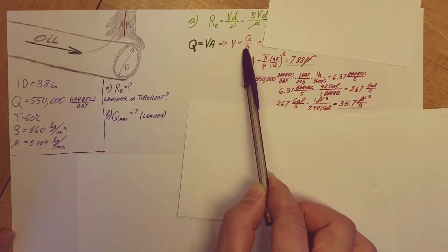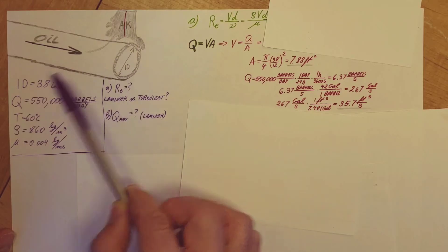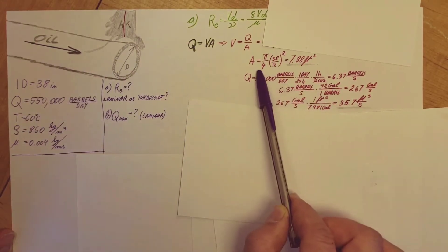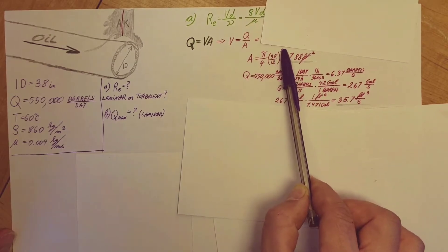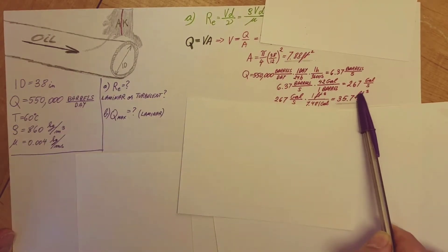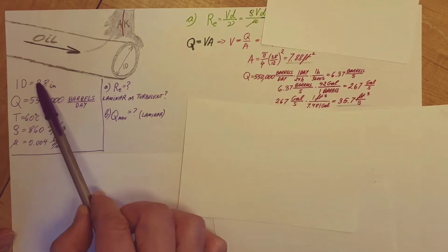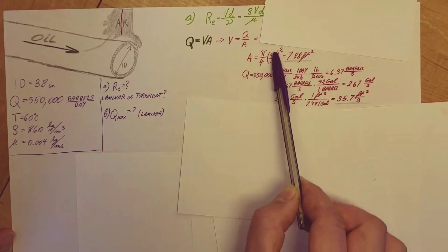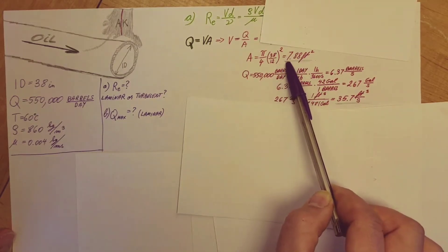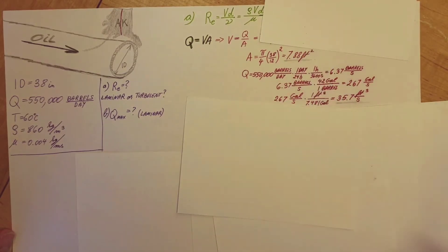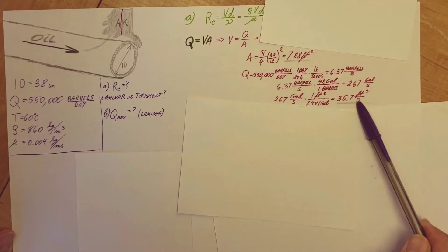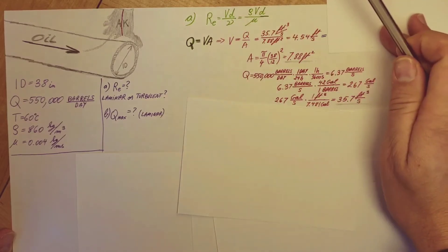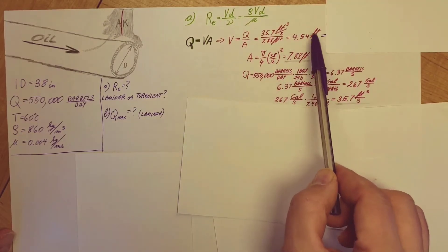The area, the cross-sectional area of the pipe where the fluid is flowing, is pi over 4, diameter squared. Since I have feet over here, I'm going to change my diameter from inches to feet. That's why we have this 12 over here, 38 over 12. That's going to give me 7.88 feet squared. I'm going to take this value, this value, plug it in here, and find my V. 4.54 feet per second.